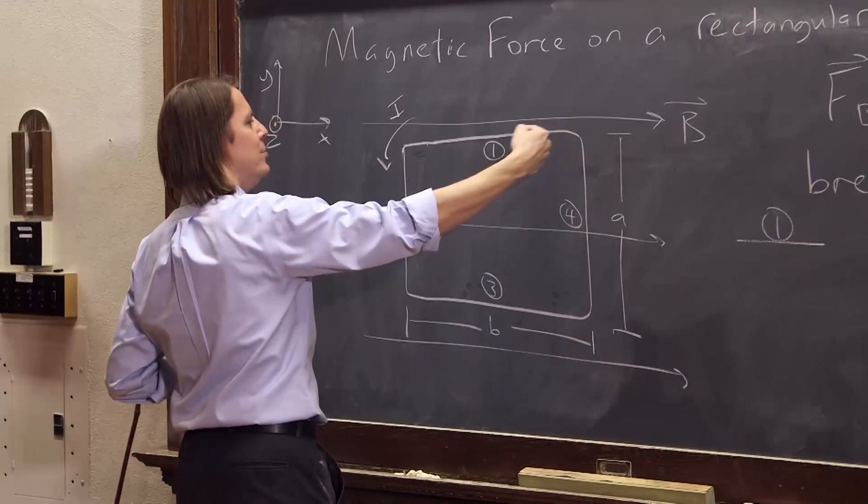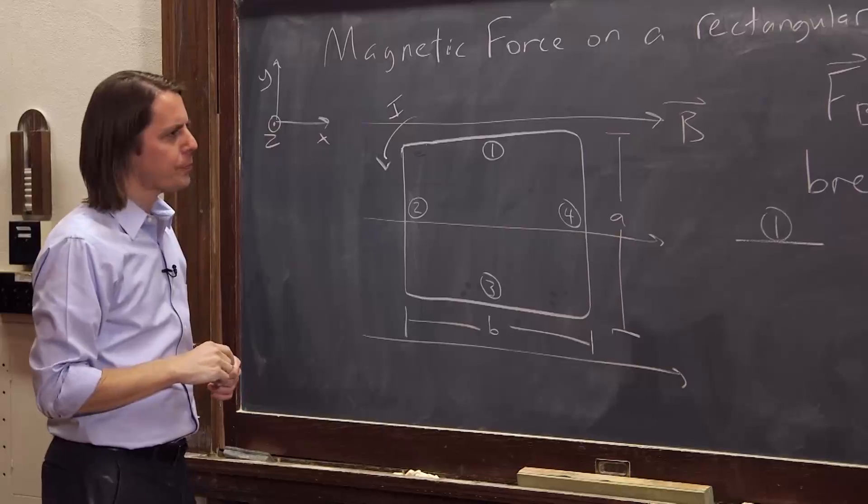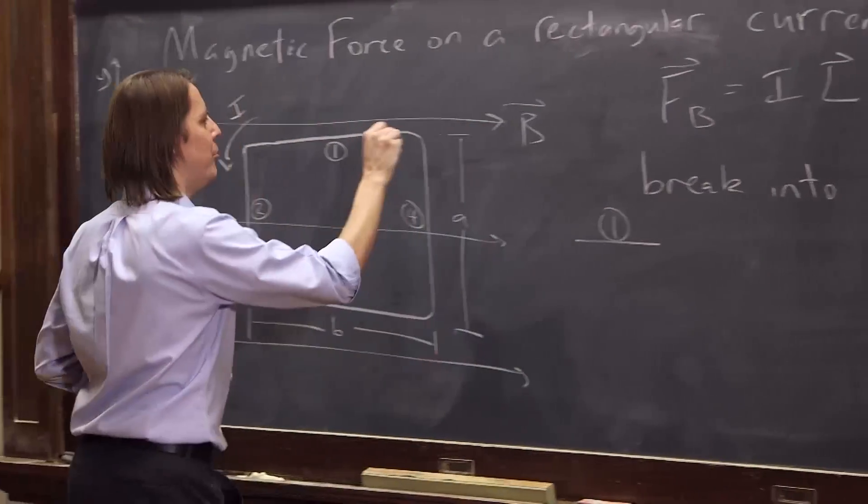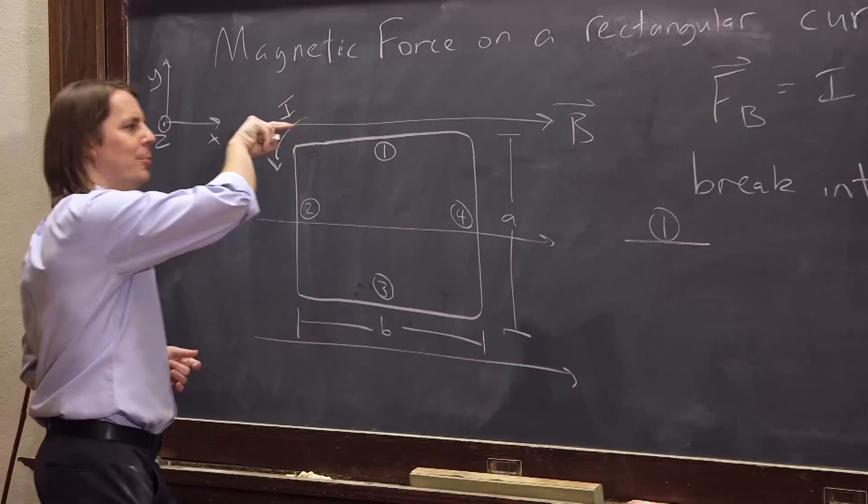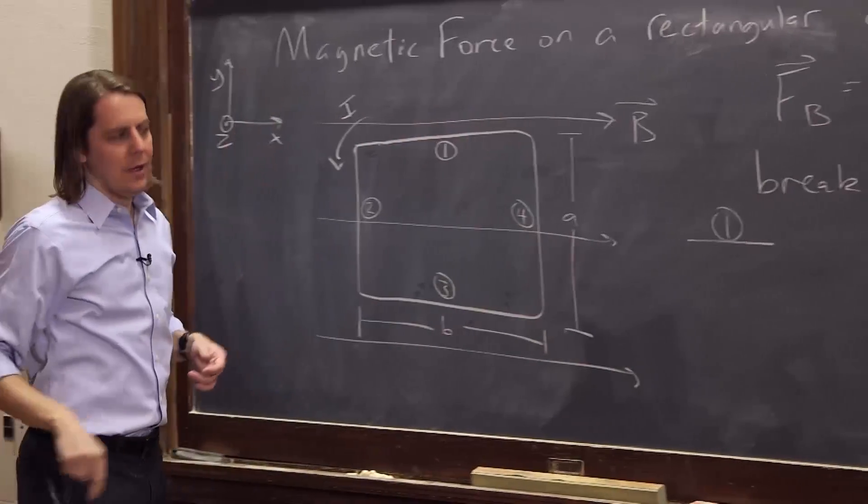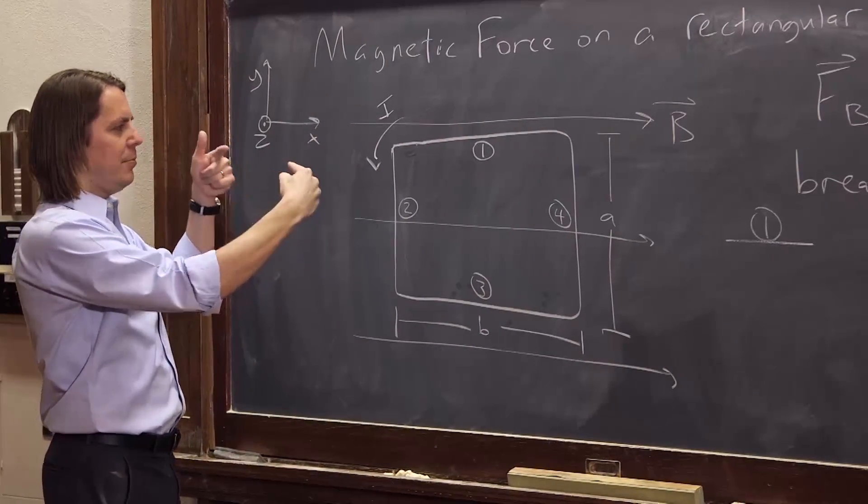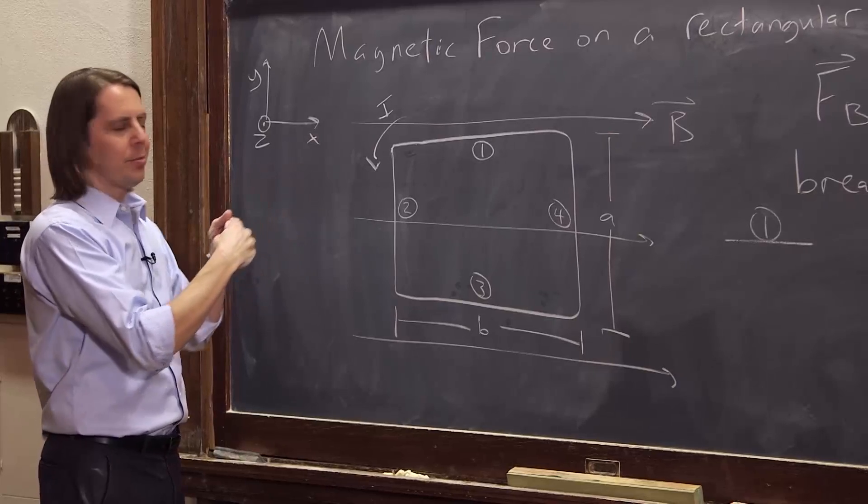So we know the force is this vector pointing this way, crossed with the B field pointing that way. So it's a cross product of two anti-parallel vectors. The cross product is zero. If you want to do it with trig, you'd say it's the magnitude of the length times the magnitude of the B field times the current, sine theta.